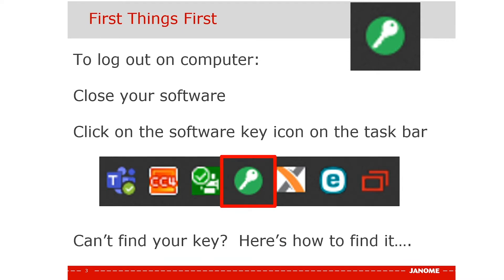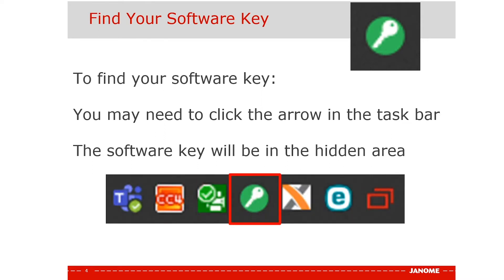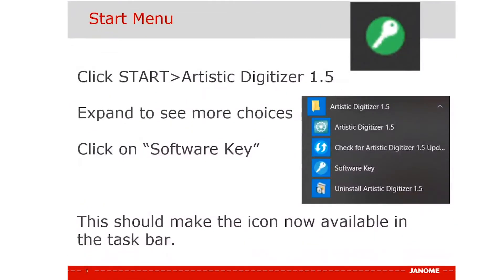Can't find your key? Here's how to find it. To find your software key, you may need to click on the arrow in the taskbar — the software key will be in the hidden area. Or, you may need to click the Start menu, then Artistic Digitizer 1.5, expand to see more choices, and click on Software Key. This should make the icon now available in the taskbar.